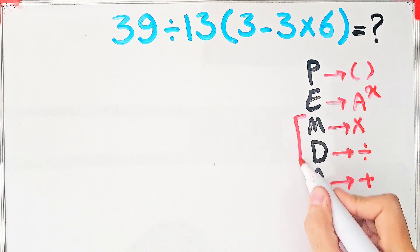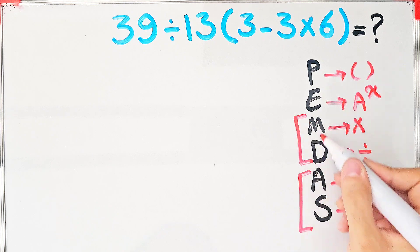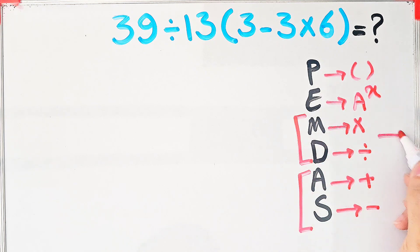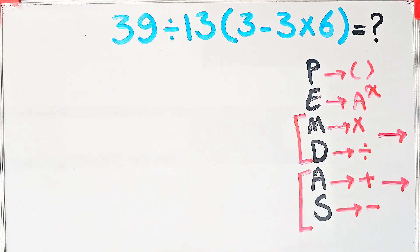Multiplication and division have the same level of priority, also addition and subtraction have the same priority. When we have both, we start from the left and simplify the question.